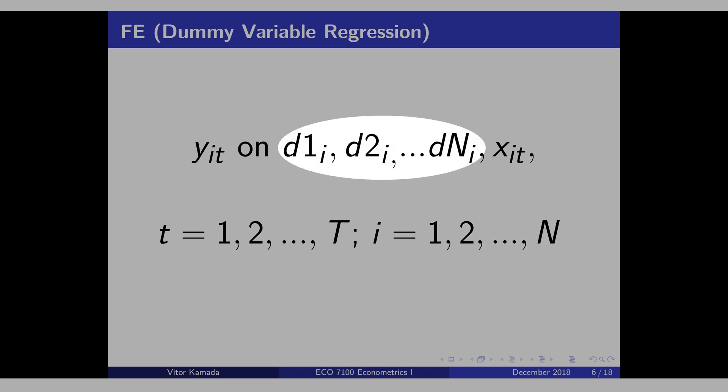That means, if you run this regression here with dummies for each country, you are going to get the same effect as if you do the time demeaning. If you study a PhD textbook, you will see the mathematical derivation that if you run this regression here, it will be equivalent to do the time demeaning.